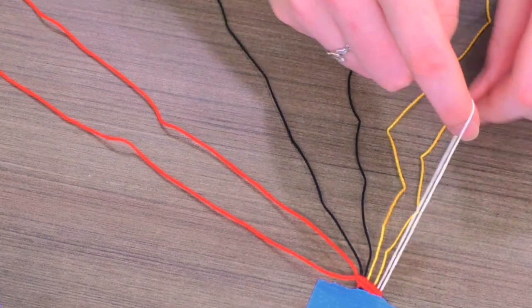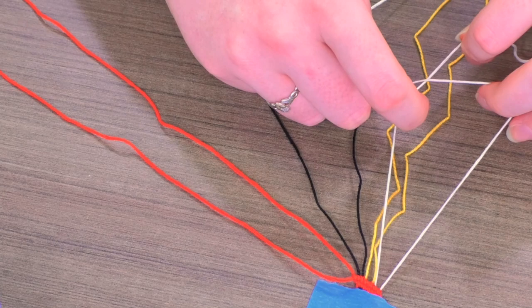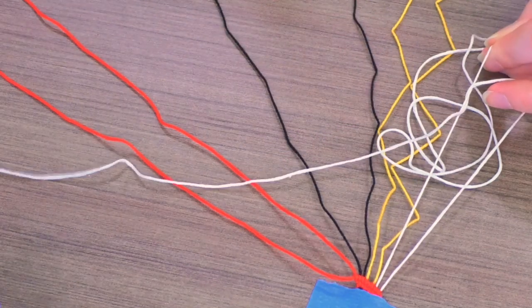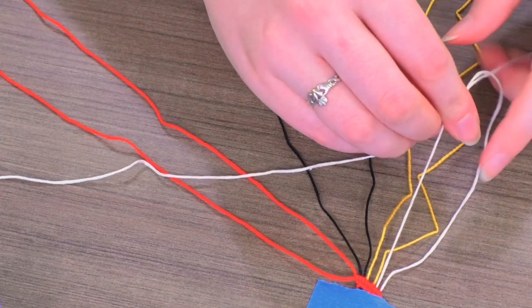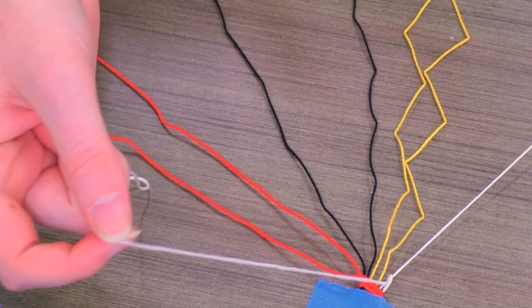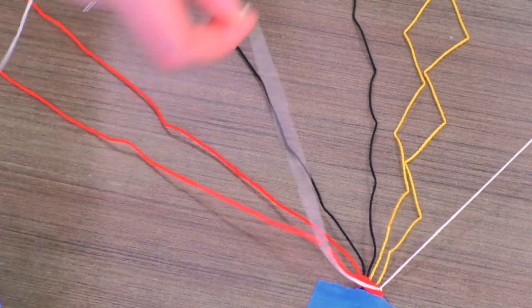You're going to start with your first string and you create sort of a four. Loop the string under, through, started to make a knot, lift, and you're going to slide your knot all the way up. Then you do it again.